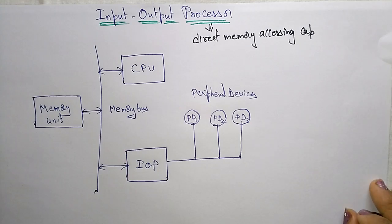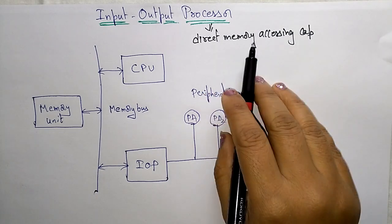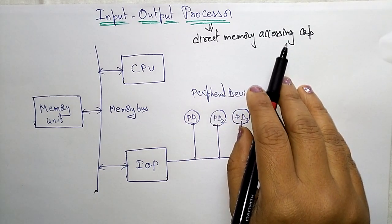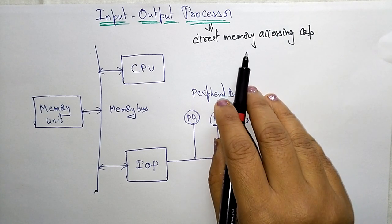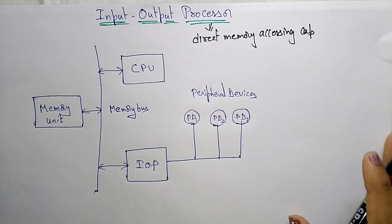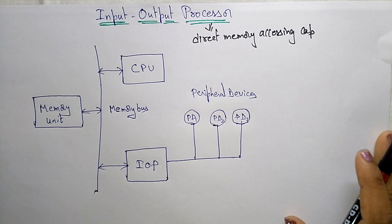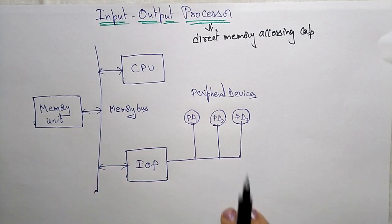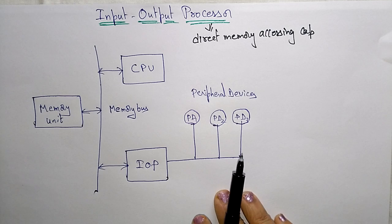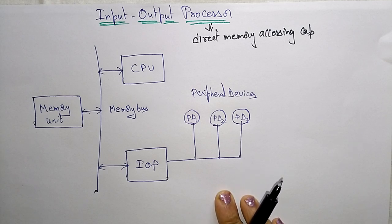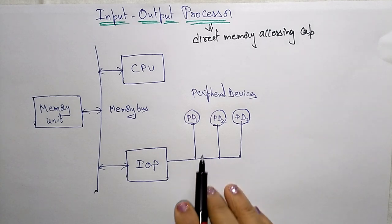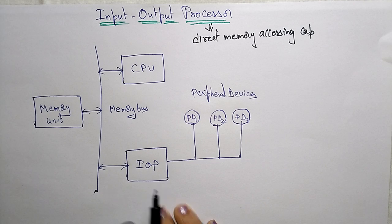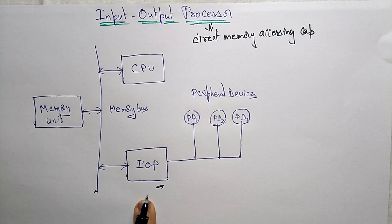Coming to the next topic: the Input-Output Processor. An Input-Output Processor (IOP) is a processor with direct memory accessing capabilities, meaning it has the ability to access memory directly without CPU involvement. The computer system is divided into a memory unit and a number of processors. Each Input-Output Processor controls and manages the IO tasks coming from external devices.